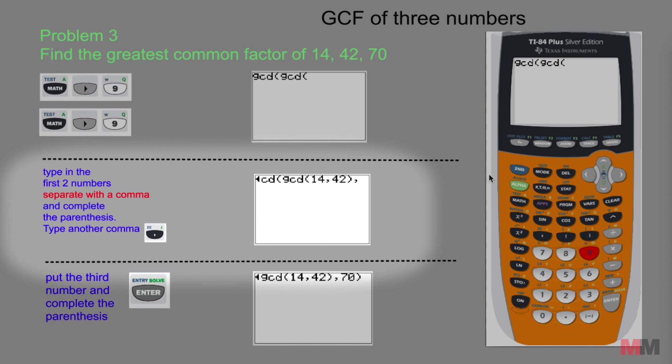Type in the first two numbers separated by a comma: 14, 42, then complete the parentheses. And this is really important. Write another comma in there. And then the last step, super easy.